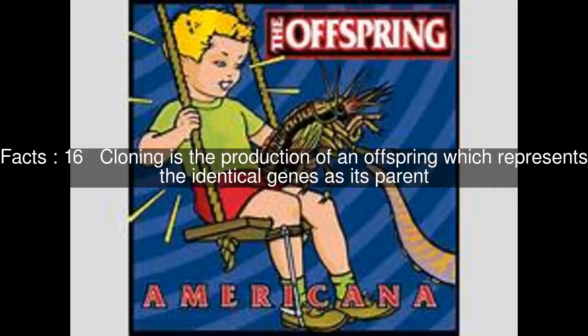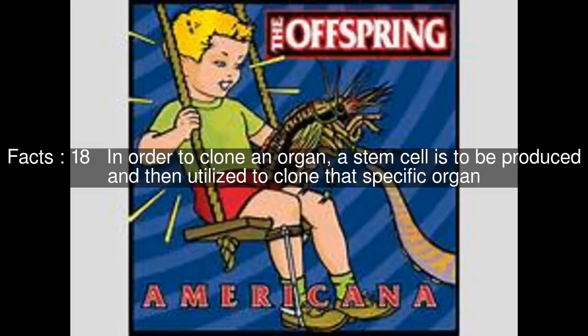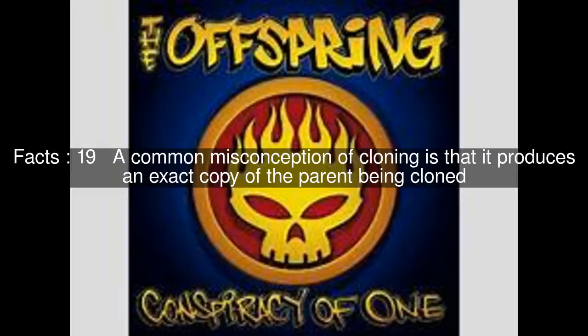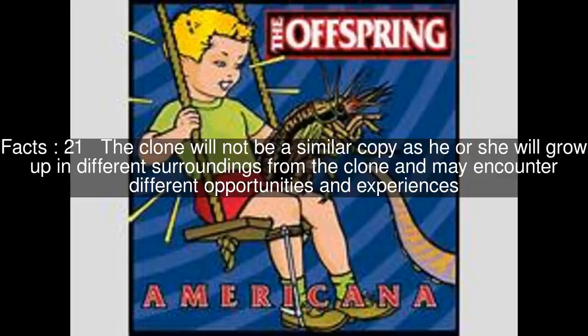Cloning is the production of an offspring which represents the identical genes as its parent. Reproductive cloning begins with the removal of the nucleus from an egg, which holds the genetic material. In order to clone an organ, a stem cell is to be produced and then utilized to clone that specific organ. A common misconception of cloning is that it produces an exact copy of the parent being cloned. Cloning copies the DNA and genes of the parent and then creates a genetic duplicate. The clone will not be a similar copy, as he or she will grow up in different surroundings and may encounter different opportunities and experiences.